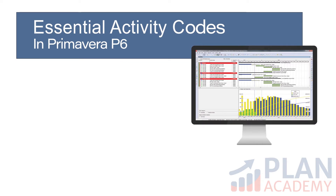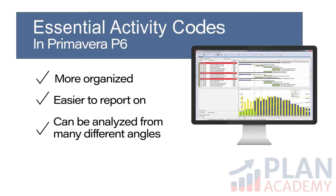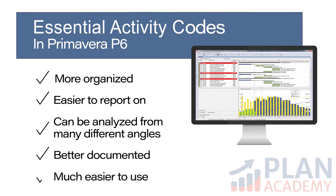Primavera P6's Activity Codes feature opens the door to making your project schedule much easier to use. By incorporating Activity Codes, you'll have a schedule that is more organized, easier to report on, a schedule that can be analyzed from many different angles, better documented, and much easier to use in general.